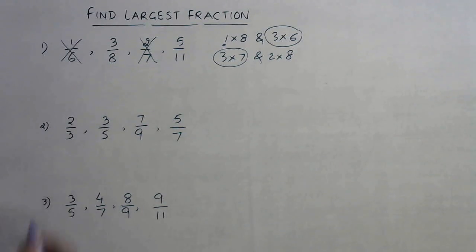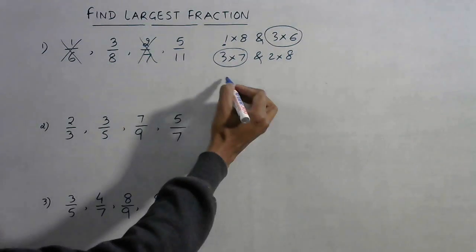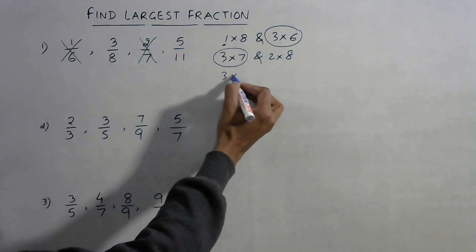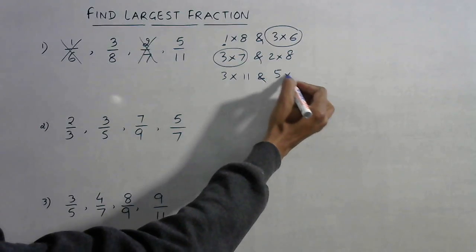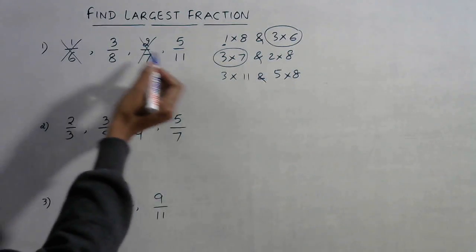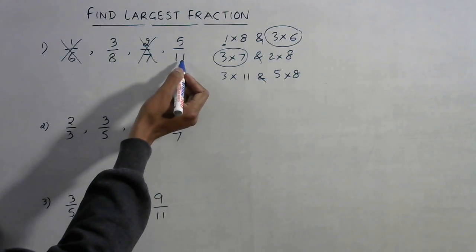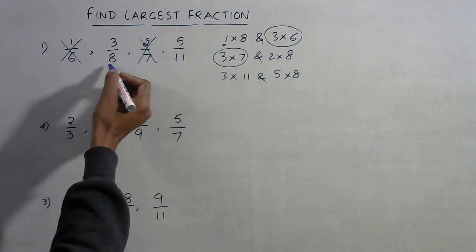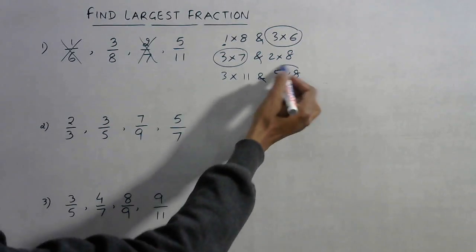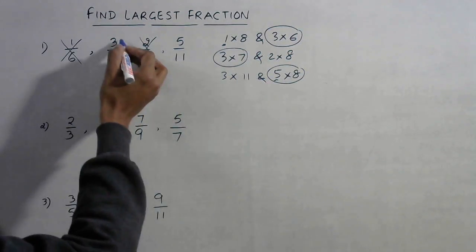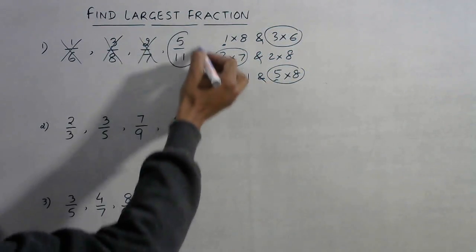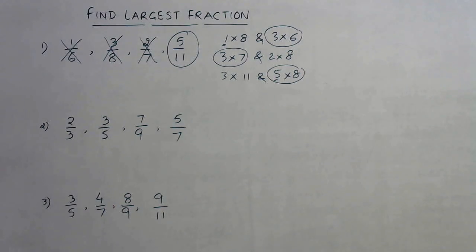Now compare 3/8 and 5/11: three into eleven is 33 and five into eight is 40. Three into eleven is smaller and five into eight is larger, so we retain numerator five and discard 3/8. Therefore the largest fraction is 5/11. I hope the method is clear.